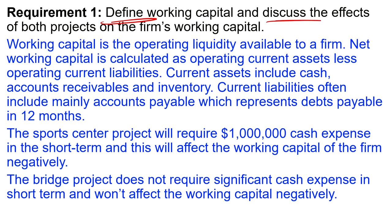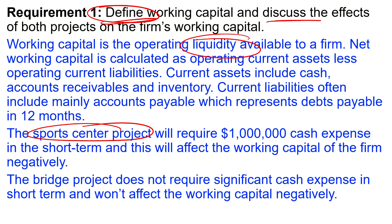For Requirement 1, working capital is the operating liquidity available to a firm. It is calculated as operating current assets less operating current liabilities. Current assets include cash, accounts receivable, and inventory. Current liabilities mainly include accounts payable — debts payable within 12 months. For the sports center project, it will require a one million dollar working capital investment in the short term, which will affect the firm's working capital negatively. The bridge project does not require significant cash expense in the short term and won't affect working capital.